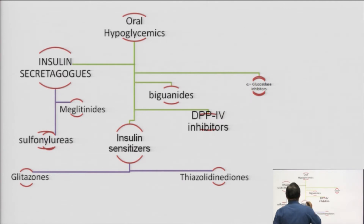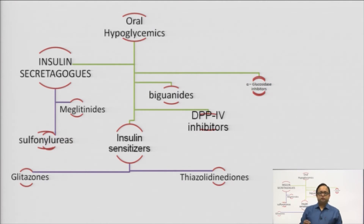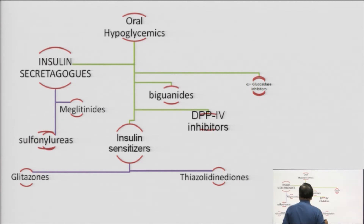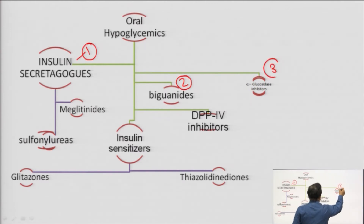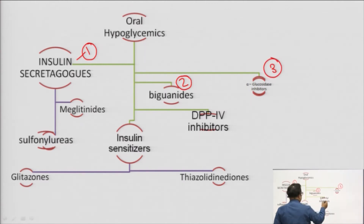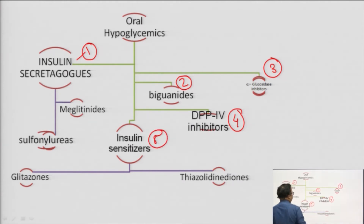The classification of oral hypoglycemics may vary slightly from book to book, but the overall purpose is the same. Oral hypoglycemics are classified as: insulin secretagogues, biguanides, alpha-glucosidase inhibitors, DPP-4 inhibitors, and insulin sensitizers.